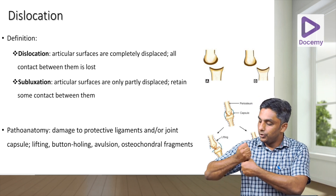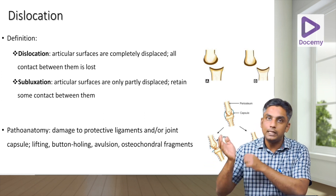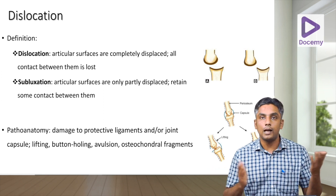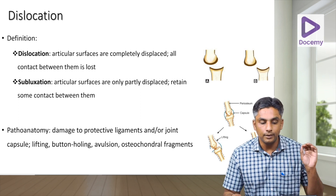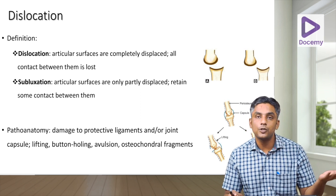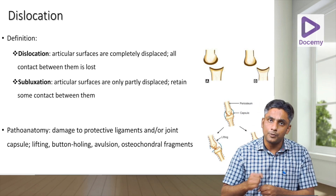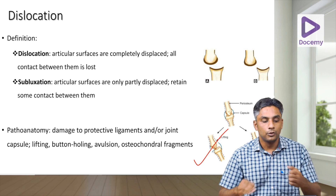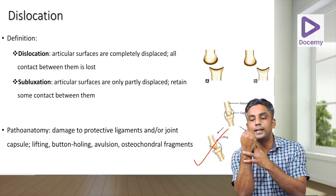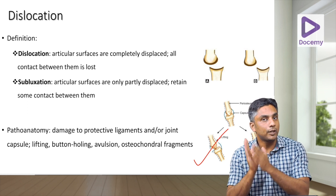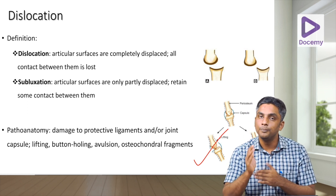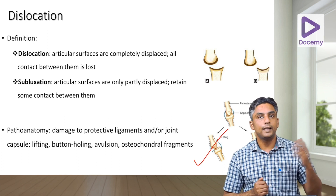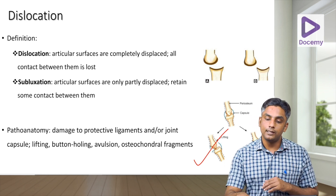The pathoanatomy of dislocation involves injury to surrounding structures — capsules, collateral ligaments, meniscus, cruciate ligaments. The capsule can sustain a lifting-off (avulsion) injury or a button-holing injury, where the articular surface button-holes through the capsule and comes to lie outside. There can also be an osteochondral fragment where articular cartilage along with a bone piece gets fractured.